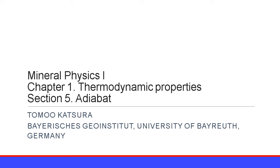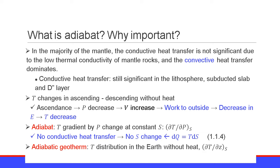The last section of Chapter 1 is the adiabatic. Let me explain what the adiabatic is and why it is important. In the majority of the mantle, conductive heat transfer is not significant due to the low thermal conductivity of mantle rocks, and therefore convective heat transfer dominates.